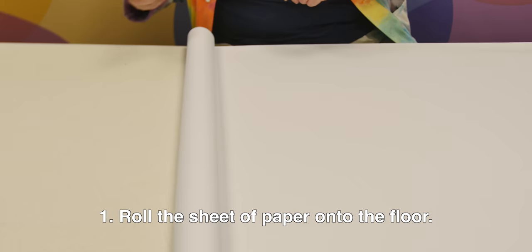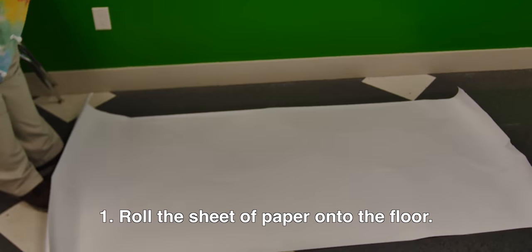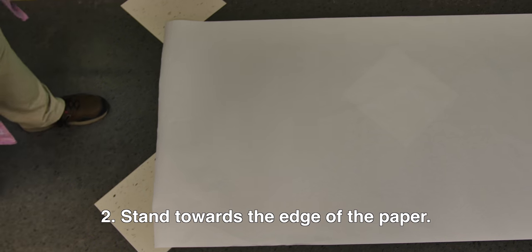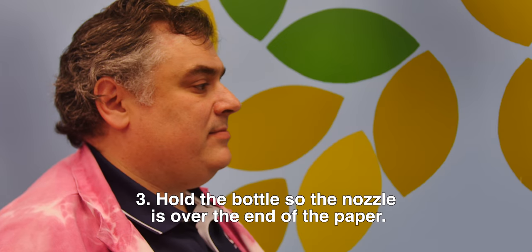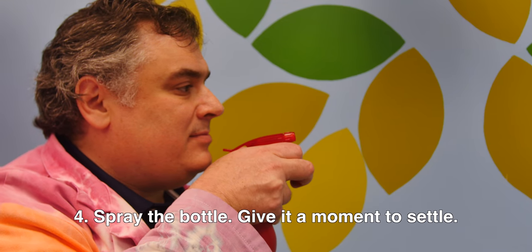First, roll the sheet of paper out, cut it, and place it onto the floor. Step up to the edge of the paper. Hold the bottle so the tip of the nozzle is directly over the edge of the paper. Finally, spray the bottle, but don't move. Give the droplets a moment to land onto the paper.